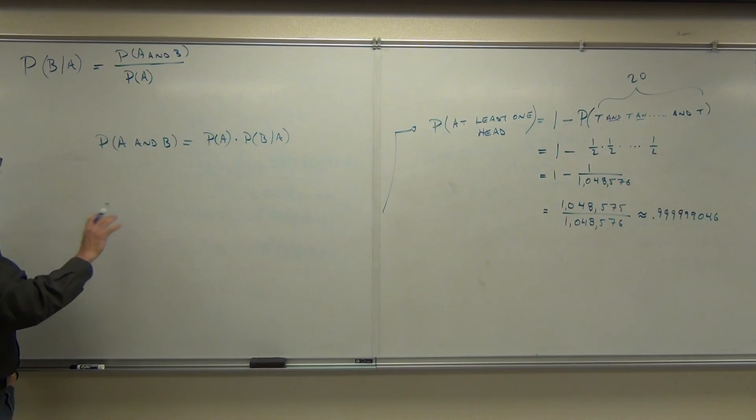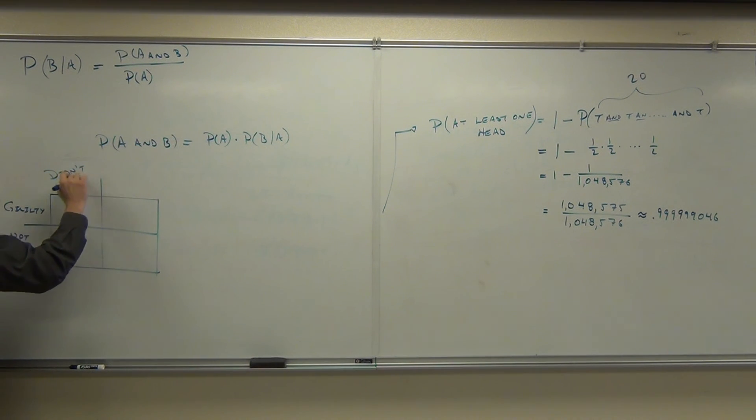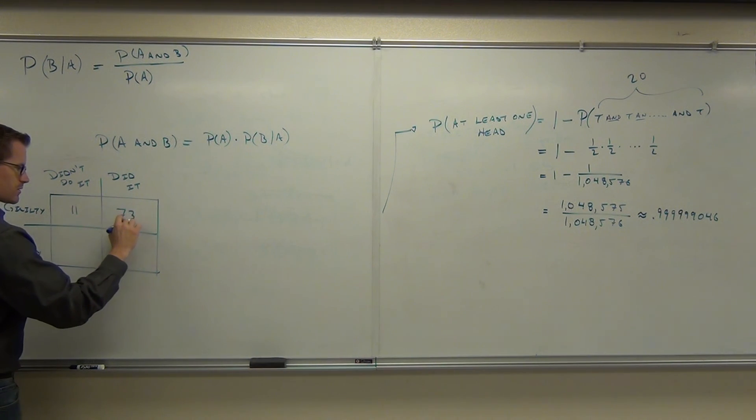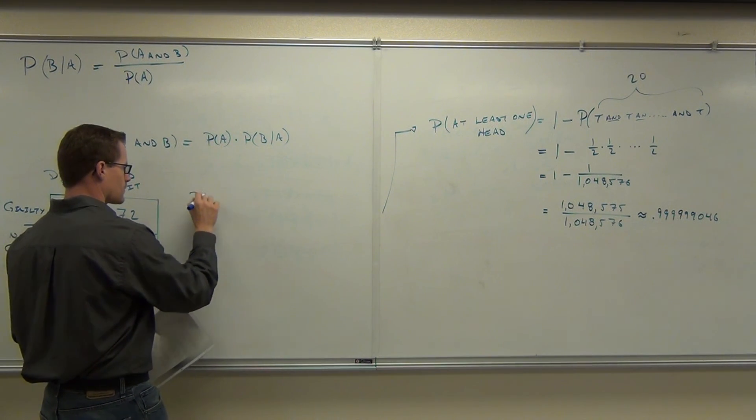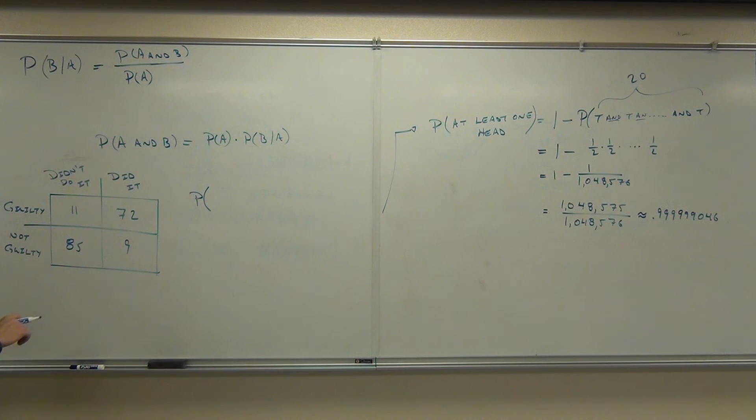Let's look at one quick example of one way we can kind of see this scenario in a table, and then we'll call it good for this section. We'll go back to our guilty table. Is this 11 or 9? Do you remember? Seven. Eighty-five. What's the probability of finding someone who's...